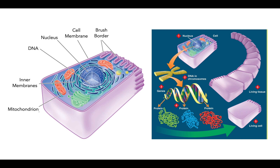Here are two pictures from the textbook. On the left we can see the individual cell. In the middle we have the nucleus with the DNA inside. The DNA contains all the information that makes us who we are — what we look like and how we function. Moving to the right, we can see DNA in chromosomes, which are found in the genes. The genes lead to the production of proteins, and those proteins determine the function and form of the cell. The cell then joins together with other cells to create tissues.